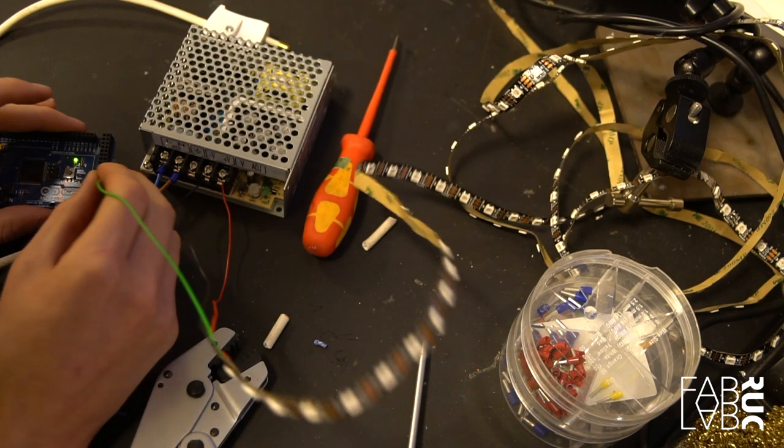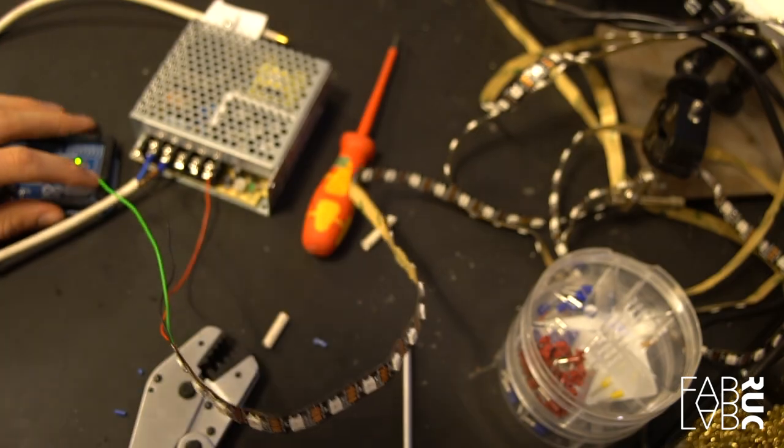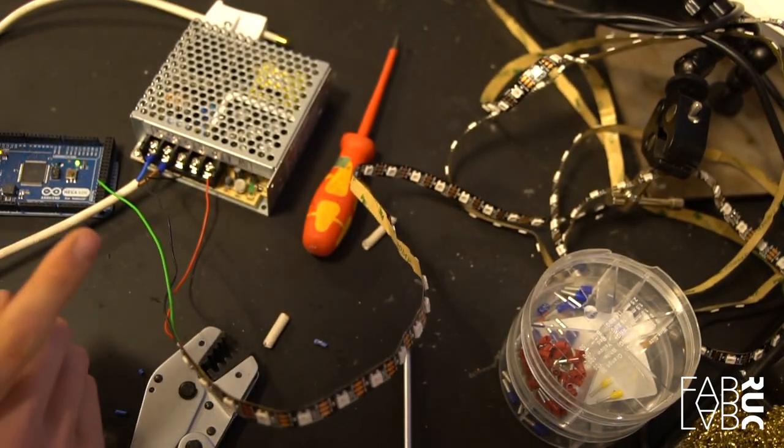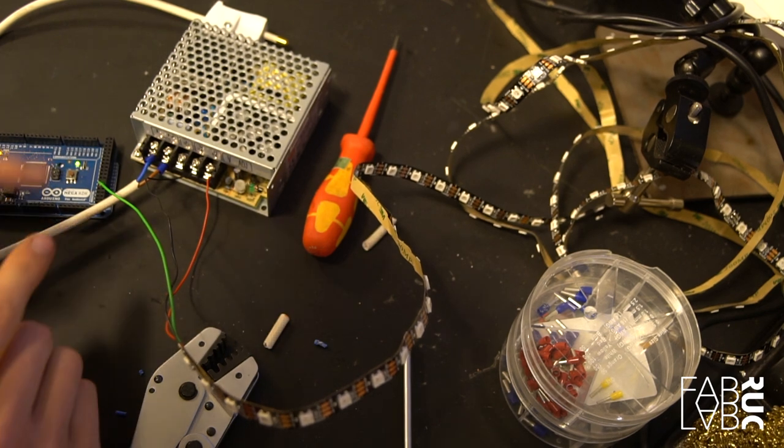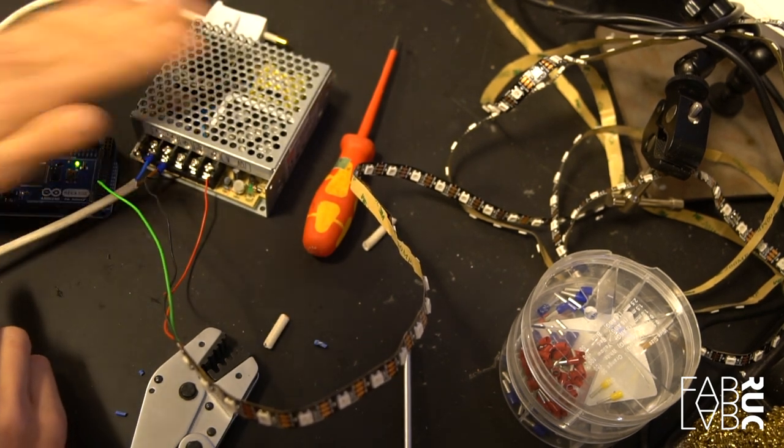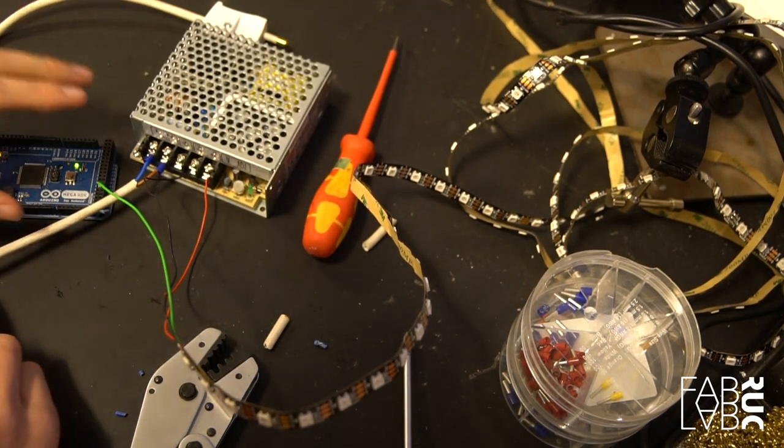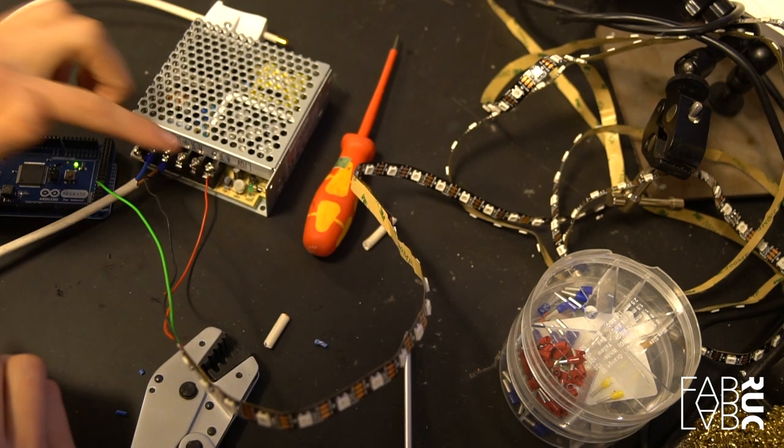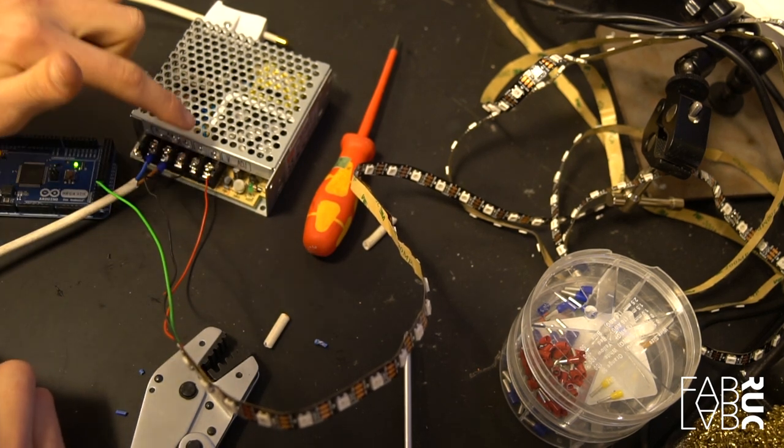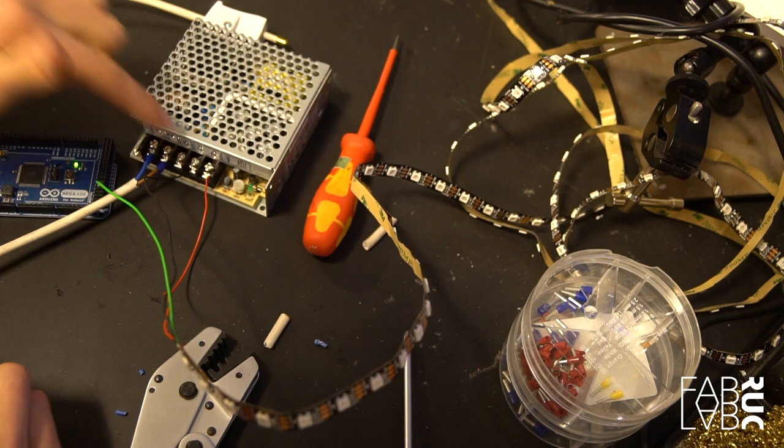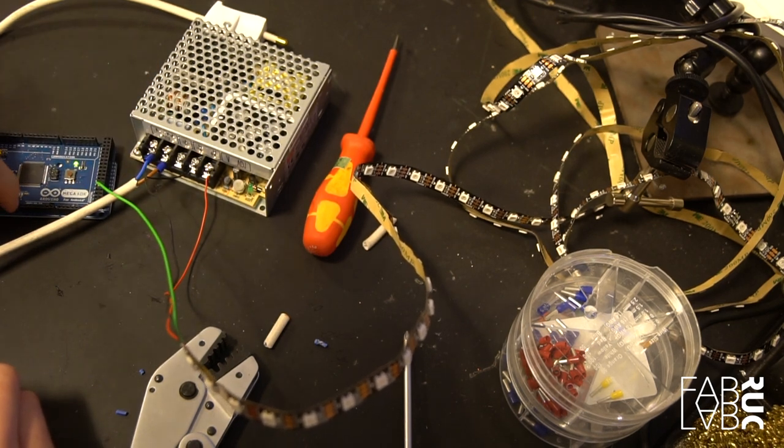But it is important that if you do this, because the power is not provided from the Arduino, it's important that they have a common reference. So it's very important that you connect a ground to the negative terminal and plug it into the ground of the Arduino so everything is the same.